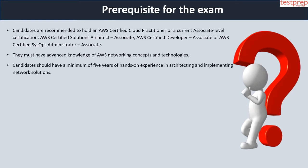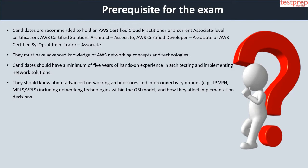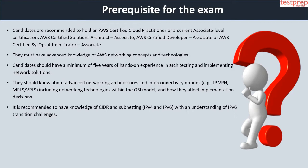Second, they must have advanced knowledge of AWS networking concepts and technologies. Third, candidates should have a minimum of five years of hands-on experience in architecting and implementing network solutions. Fourth, they should know about advanced networking architectures and interconnectivity options, for example IP VPN, MPLS, or VPLS, including networking technologies within the OSI model and how they affect implementation decisions.